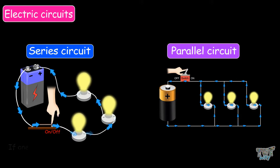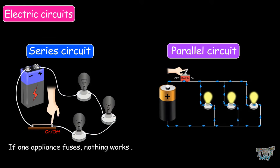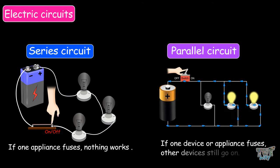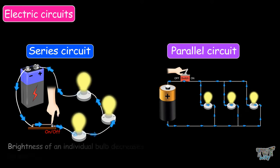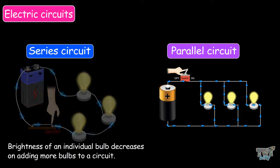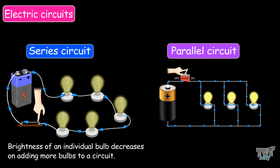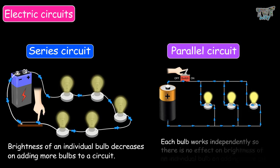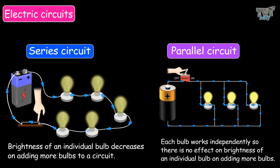In a series circuit, if one appliance fuses, nothing works. Whereas in a parallel circuit, if one device or appliance fuses, the other devices can still work. In a series circuit, the brightness of an individual bulb decreases upon adding more bulbs, whereas in a parallel circuit, each bulb works independently, so there is no effect on the brightness of each individual bulb upon adding more bulbs.